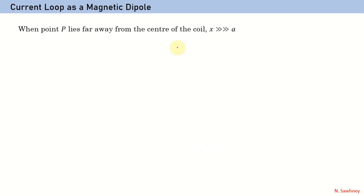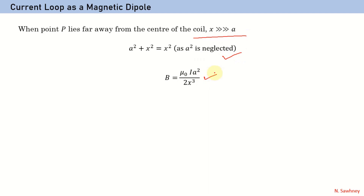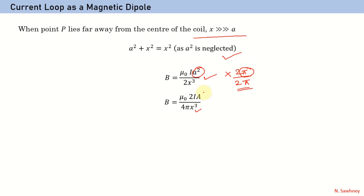When point P lies at a far-off distance from the center of the coil, we can neglect a² from the denominator, and the magnetic field becomes B = μ₀Ia² / 2x³. Multiplying 2π in both numerator and denominator, the denominator becomes 4πx³ and the numerator becomes μ₀ · I · 2 · πa². Here, πa² is the area A of the current loop, so I have replaced πa² with area A.